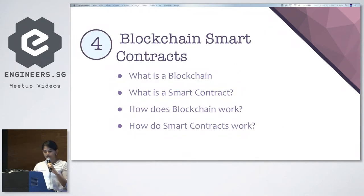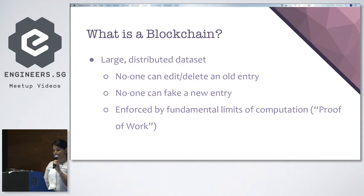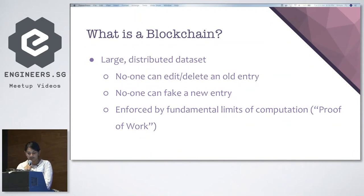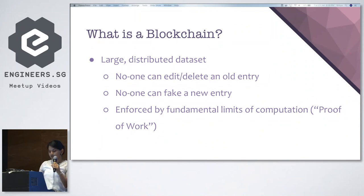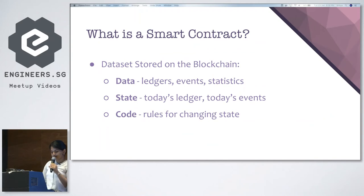The fourth component is blockchain smart contracts. Blockchain is a large distributed dataset — essentially a decentralized database. Two things to remember: no one can edit or delete an old entry, and no one can fake a new entry. Smart contracts go beyond just storing data on the blockchain — they allow for decentralized computation.